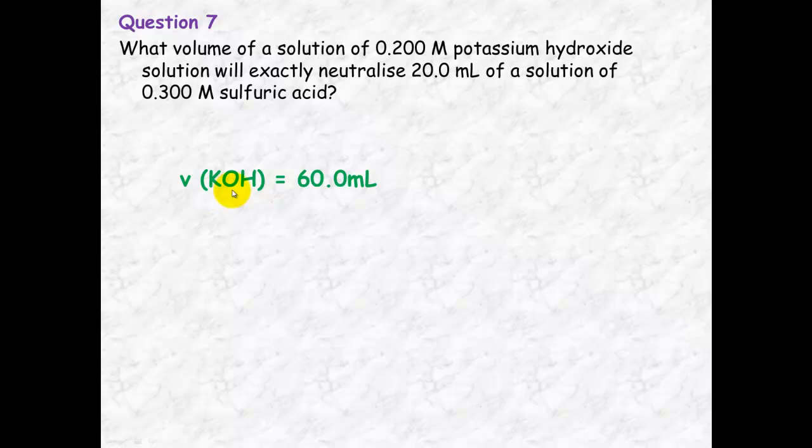So volume of potassium hydroxide equals 60.0 mil. I'm going to go through the work solution of that now. But if you've got it right, you don't need to watch any more of this video.